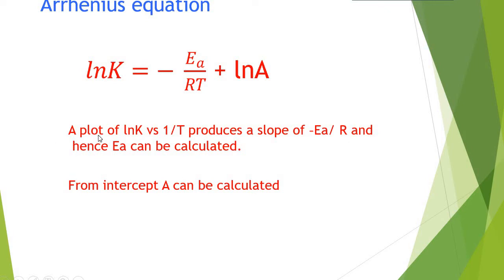Therefore, a plot of ln(K) versus 1/T produces a slope of minus Ea divided by R, and Ea can be calculated from the slope. From the intercept, the pre-exponential factor A can be calculated.